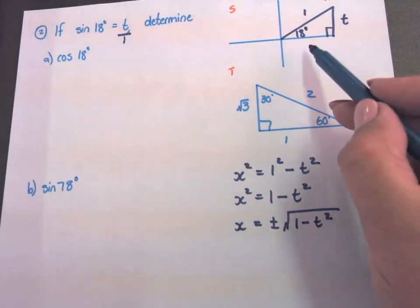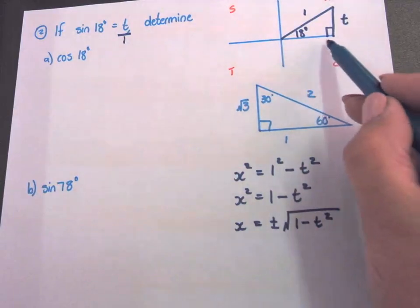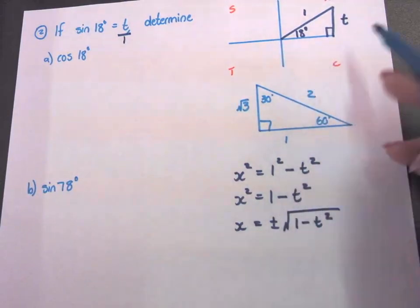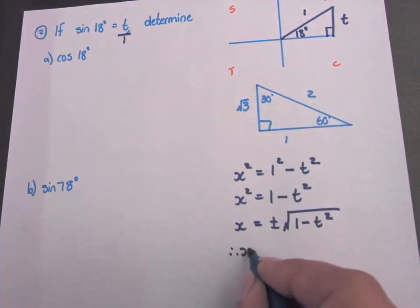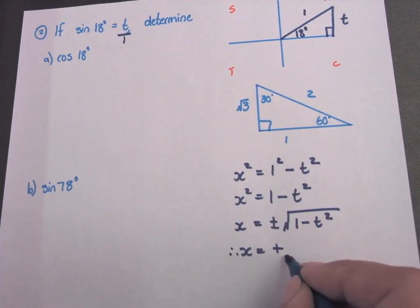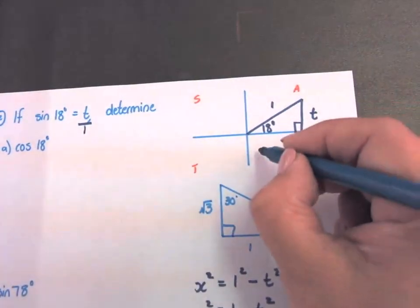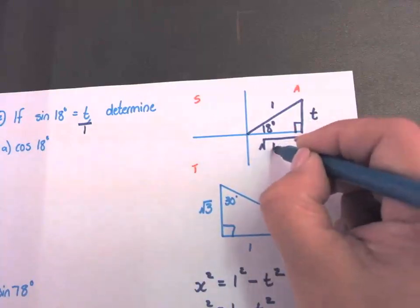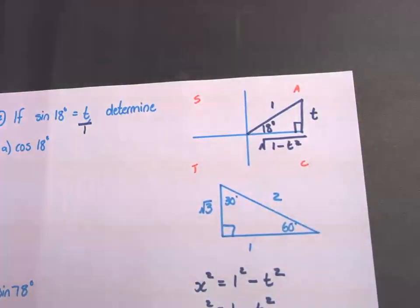Look at your triangle. Will this x length be a positive or negative? Positive. Therefore x will be the positive square root. And you fill it in on your diagram: square root of 1 minus T squared.